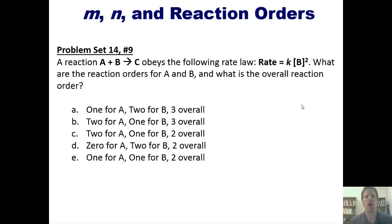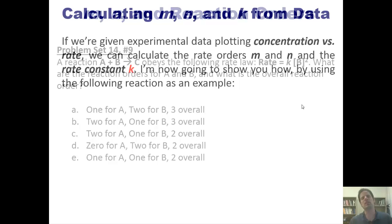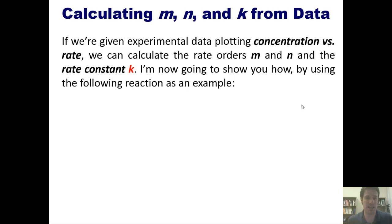How about this one? A reaction A plus B goes to C obeys the following rate law. Rate equals K times the concentration of B squared. What are the reaction orders for A and B? And what is the overall reaction order? Once again, I'm not going to answer this question for you, but we'll let you think about it and see if you can come up with the answer yourself.